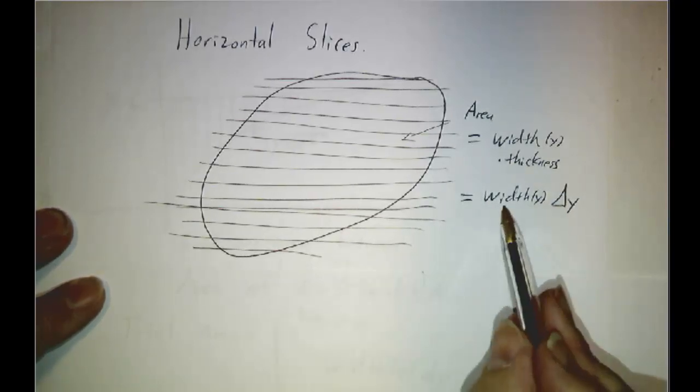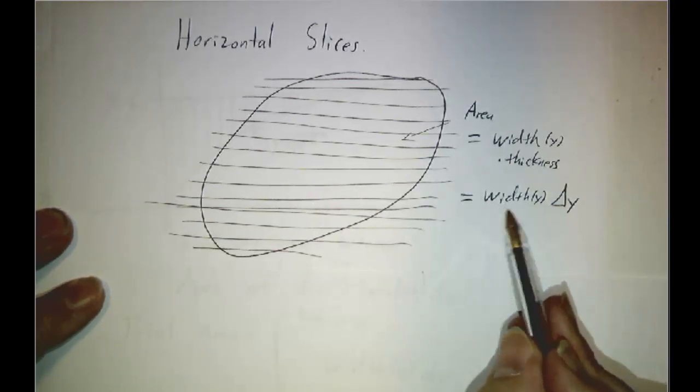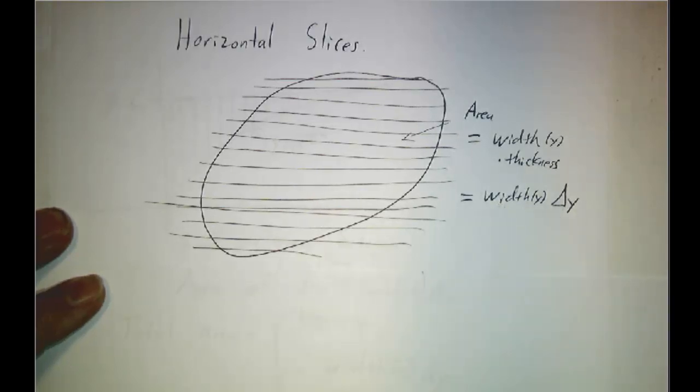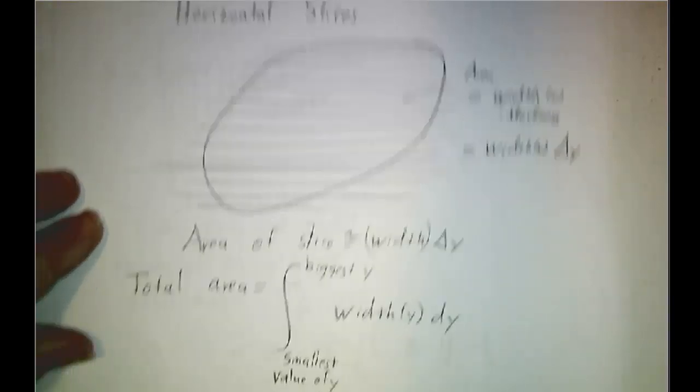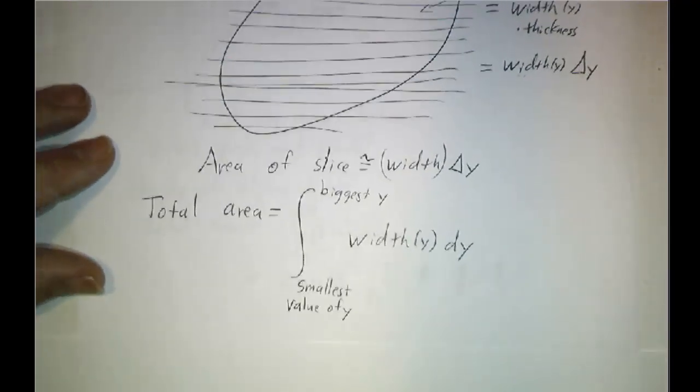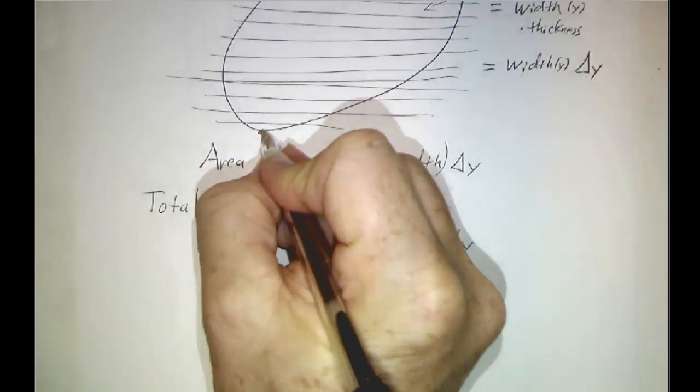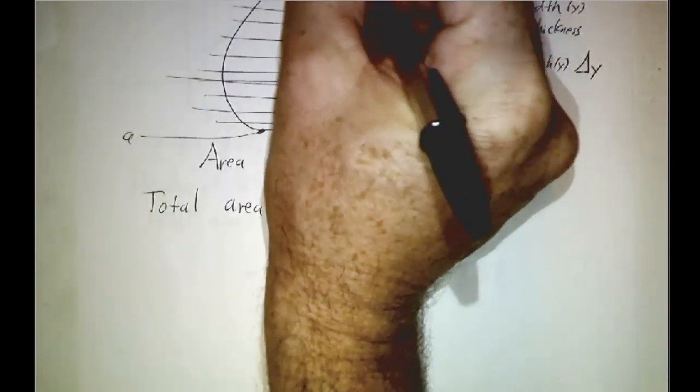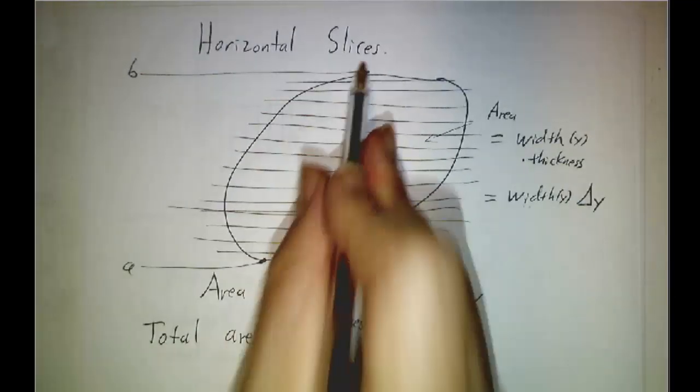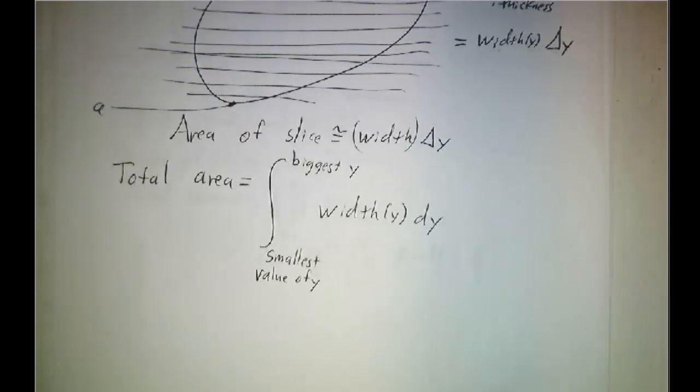And then if we put all of these together, we get a sum of width of y times delta y. And when you take a limit, that sum becomes an integral. So instead of integrating from the smallest value of x to the biggest value of x, you integrate from the smallest value of y to the biggest value of y. From a to b of not the height, but the width. Either method works. Sometimes it's better to slice vertically. Sometimes it's better to slice horizontally.